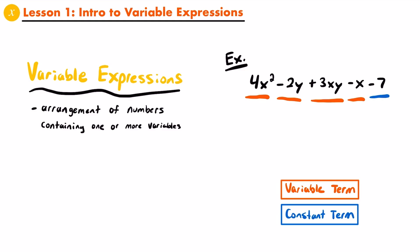The one that we didn't look at, on the end here — negative 7 — doesn't contain any variables, so we would call it a constant term. It represents a number that never changes; that's why we call them constants. The number remains the same — it's constant. And so, thinking about variable and constant terms, another way that we could define variable expressions is by thinking of them as being a combination or addition of variable and constant terms.